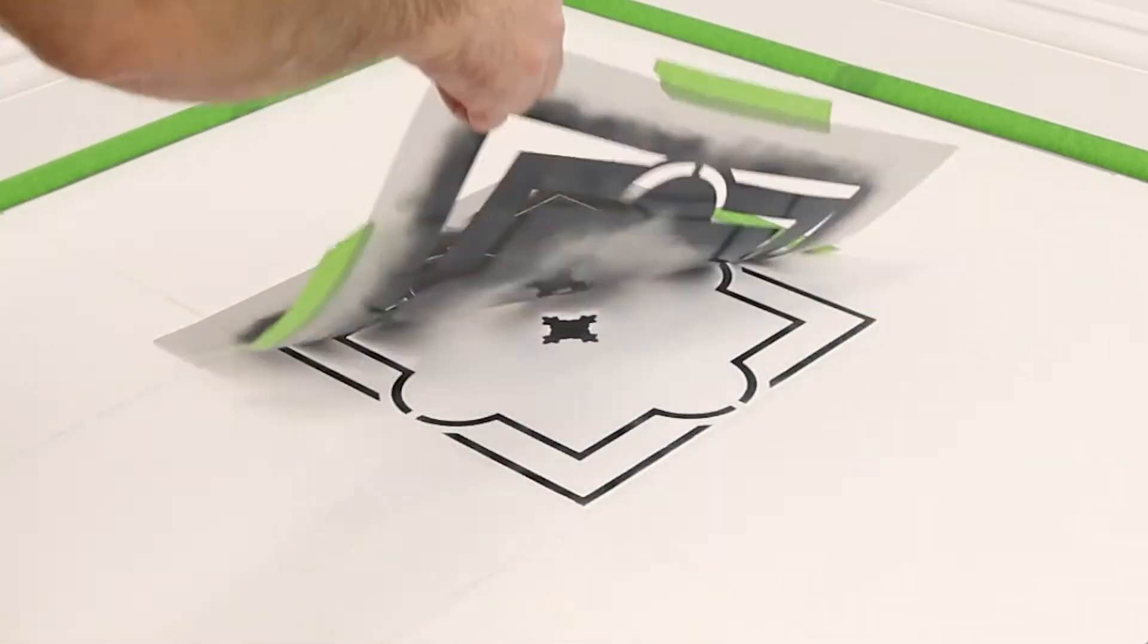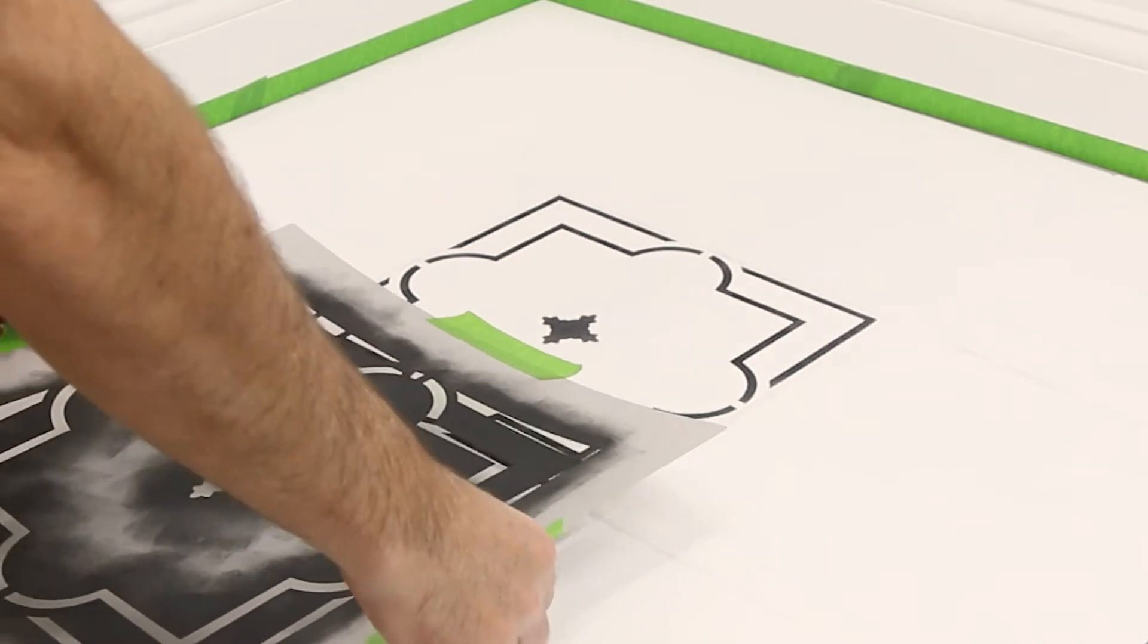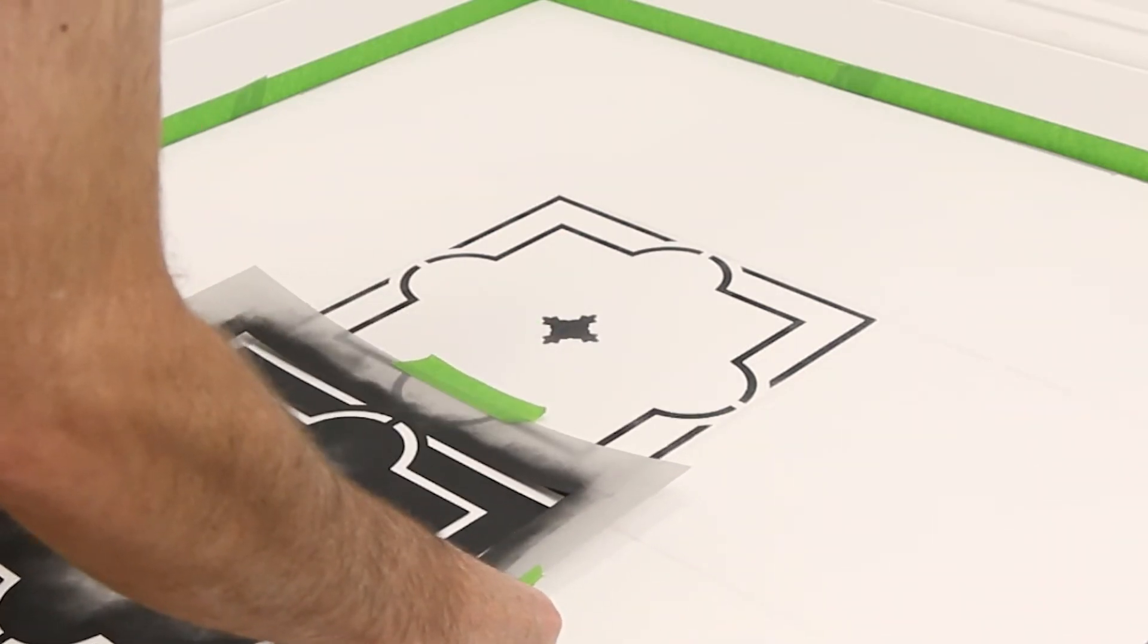Once finished, simply lift the stencil and move it to the next tile. Save the tiles adjacent to the wall for last.